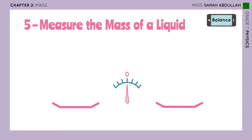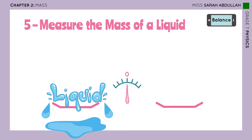Now let's talk about how we can measure the mass of a liquid. Can we measure it the same way as a solid — place the liquid on one plate and add labeled masses until equilibrium is reached? If I simply pour the liquid on the pan, it will spill. The liquid takes the shape of its container and has an indefinite shape, unlike a solid which has a definite shape. So I can't measure the mass of the liquid this way.